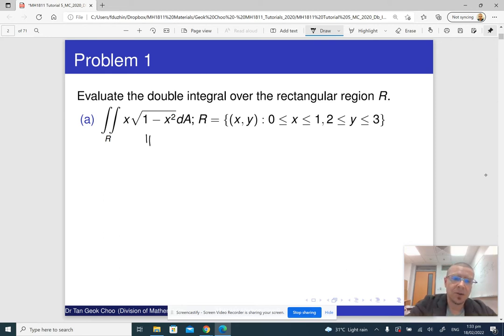So, this is going to be the integral from 0 to 1 by x. Then the integral from 2 to 3, 2 to 3 by y. The function that we are integrating is x times 1 minus x squared dy dx. But then notice that the integrand does not depend on y, so you can move it here.